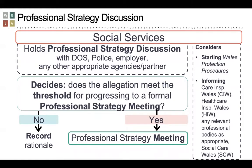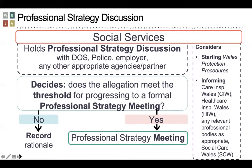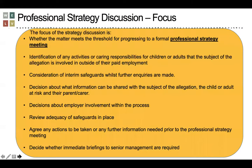The professional strategy discussion will determine whether the allegation meets the threshold for progressing to a formal professional strategy meeting. If not, the rationale must be recorded. If yes, a professional strategy meeting will be convened. The focus of the discussion includes consideration of whether the threshold is met, any activities or caring responsibilities to consider, decisions about employer involvement, a review of the adequacy of safeguards in place for the child or adult at risk, whether any immediate briefings to senior managers are required, and agreeing any actions or further information needed prior to the strategy meeting.